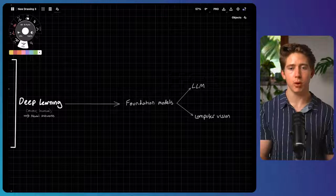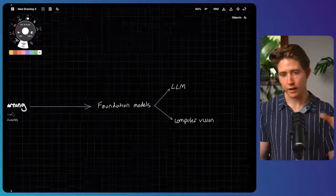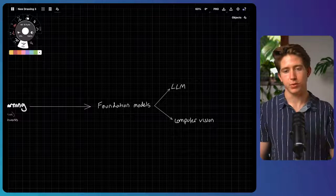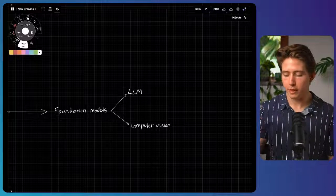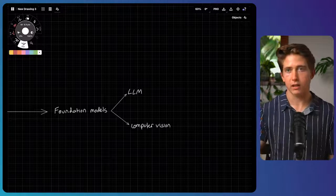And with deep learning, we can then form these big models based on tons of data called foundational models. And two examples of those are large language models and computer vision. And these are the things which we've been interacting with, with things like ChatGPT and DALI 3.